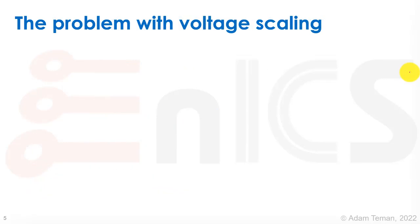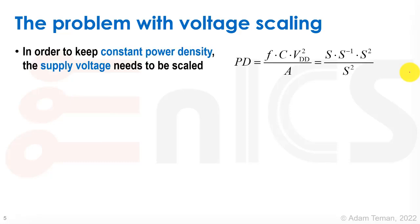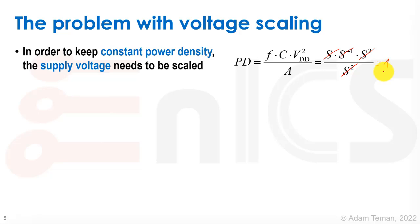Why does this happen? It's a problem with voltage scaling. To keep constant power density according to Dennard's model, the supply voltage needs to scale along with other critical dimensions. Power density can be modeled as frequency times capacitance times voltage squared, divided by transistor area (length times width). If we scale by factor s, the terms cancel out and power density stays constant — but only if voltage is also scaled.